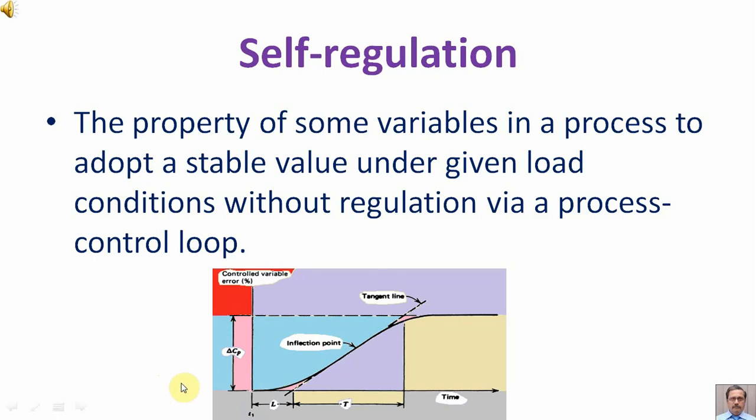To explain this we have the attached diagram. Initially the process variable was at a stable value. Then at T1 a transient disturbance has occurred in the process and the process variable is changing with time. But again it has attained a stable value, a new stable value, without help of a process control loop.